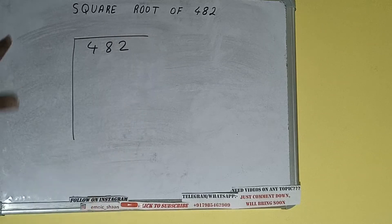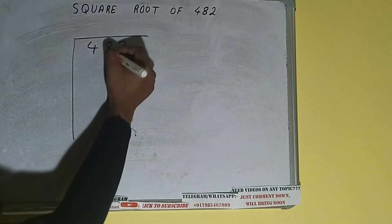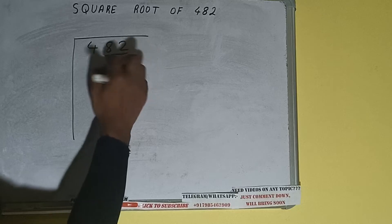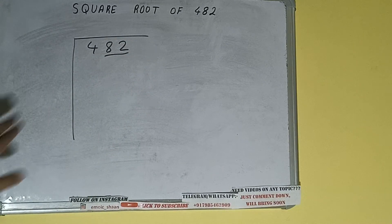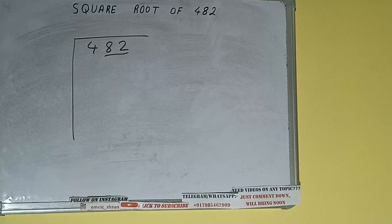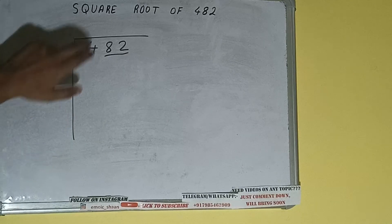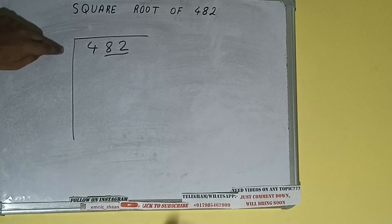The next thing we need to do is form pairs from the right hand side. One pair will be this, and 4 will be left out. So first we'll divide this 4 and then bring down the pair. The rule is whatever number we write here, we have to write here also.